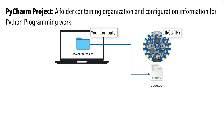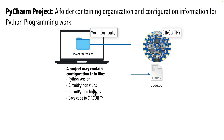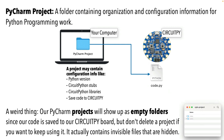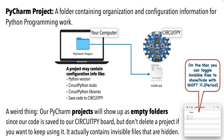A project in PyCharm contains configuration information needed when writing Python code, and this configuration is saved to our computer. When working with CircuitPython, the project configuration is saved to our computer, but our code is saved to our CircuitPy board. Our project will include configuration such as: use the latest version of Python 3, extend it to recognize CircuitPython stubs, add any CircuitPython libraries we plan to use, and save our code to the CircuitPy board. One weird thing: a PyCharm project shows up as a folder and may look empty because code is saved to the board, but hidden configuration files are actually inside — don't delete it unless you really want to remove the project.